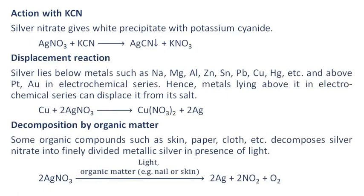Action with potassium cyanide: silver nitrate gives a white precipitate with potassium cyanide. Regarding displacement reactions: silver lies below metals such as sodium, magnesium, aluminum, zinc, tin, lead, copper, and mercury, and above platinum and gold in the electrochemical series. Hence, metals lying above silver in the electrochemical series can displace it from its salt.